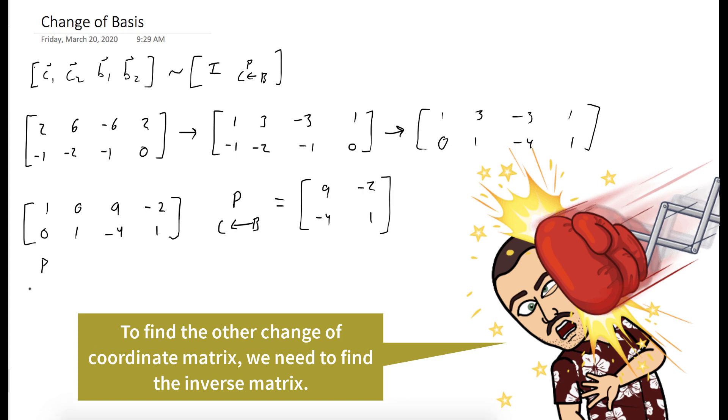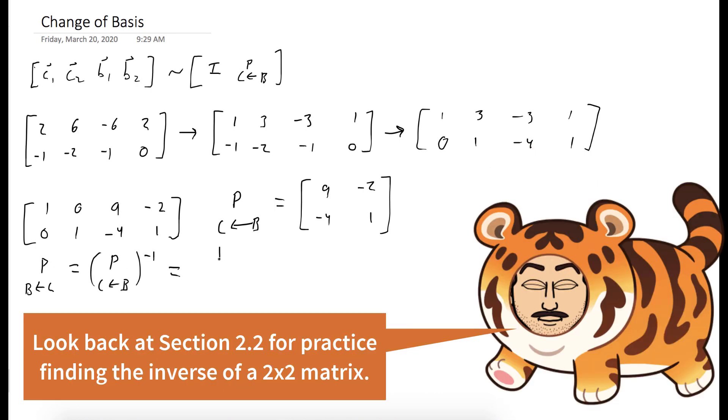And now to get the change of basis from C to B, all we need to do is find the inverse of this 2 by 2 matrix. As we saw a few weeks ago, that's 1 over the determinant times this matrix, which gives us [1, 4, 2, 9].